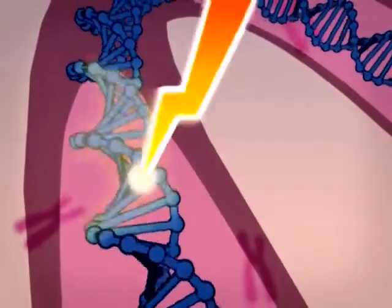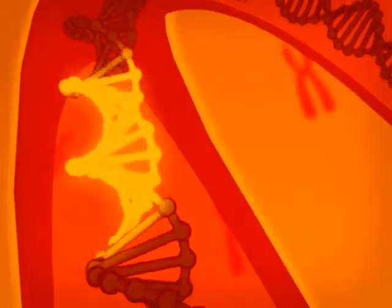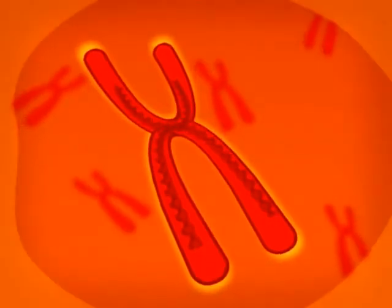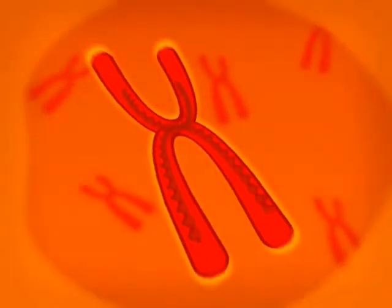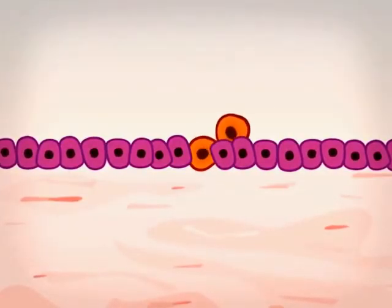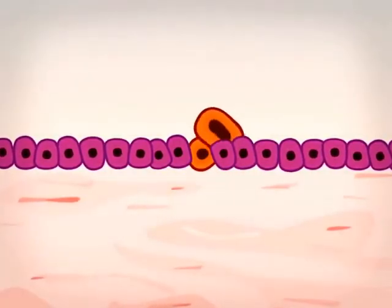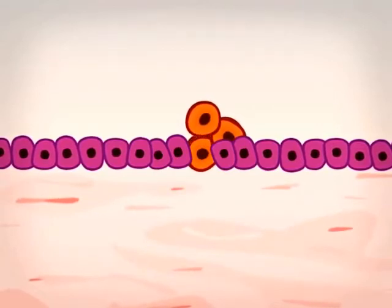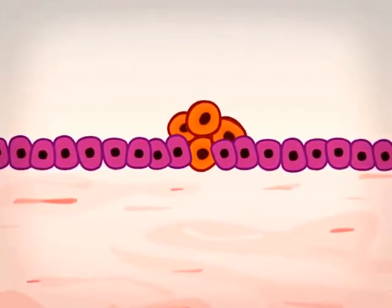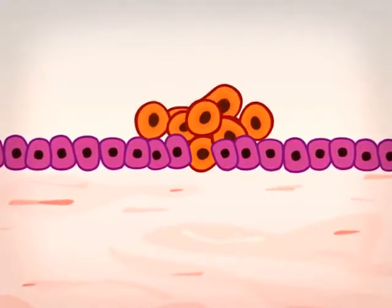Sometimes, some of these genes undergo a change. The nucleus then sends out abnormal orders and the cell goes wrong. It multiplies uncontrollably and takes on a life of its own. Each new cell produced contains the same defect. The cells proliferate chaotically and form a tumor.